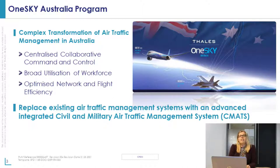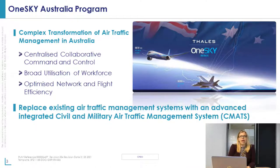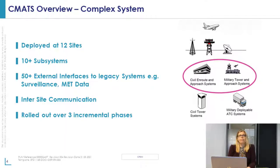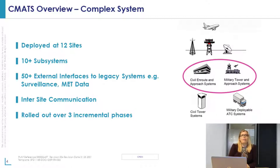It also introduces optimised network and flight efficiency, creating flexible airspace to enable better management of traffic volumes for both military and civil operations. Myself and Peter both work for the prime contractor TALIS on the OneSky programme, working on the design for replacing the existing air traffic management systems with an advanced integrated civil and military air traffic management system, also known as CMATS. CMATS is going to be deployed across 12 sites in Australia, and each deployment consists of over 10 subsystems.